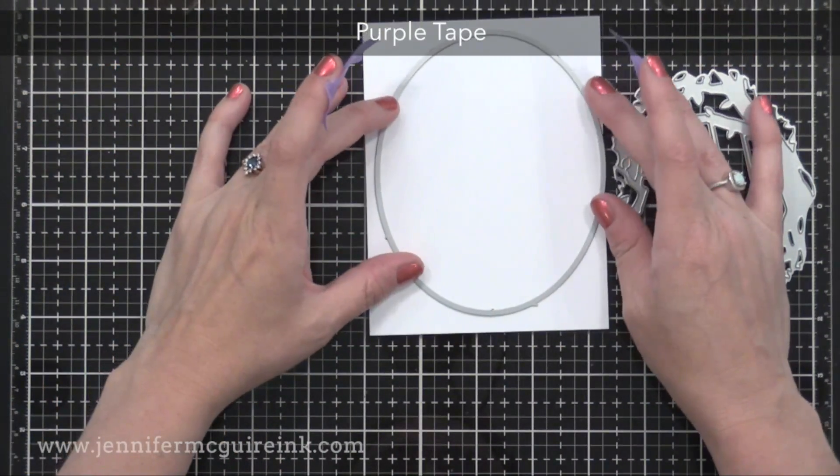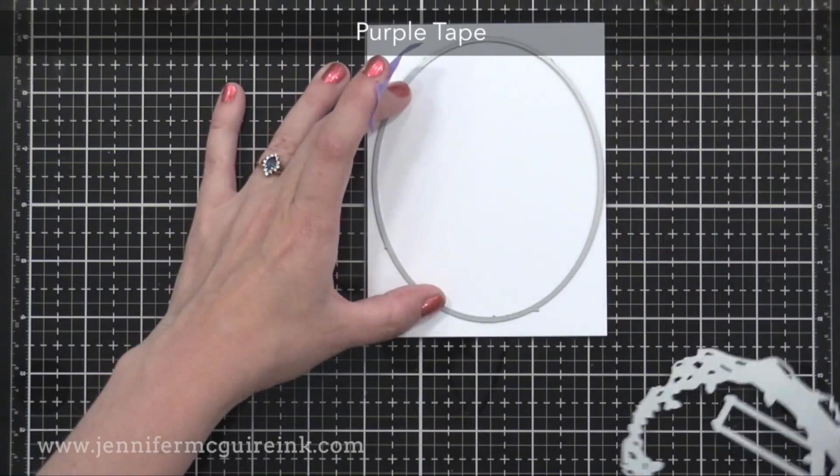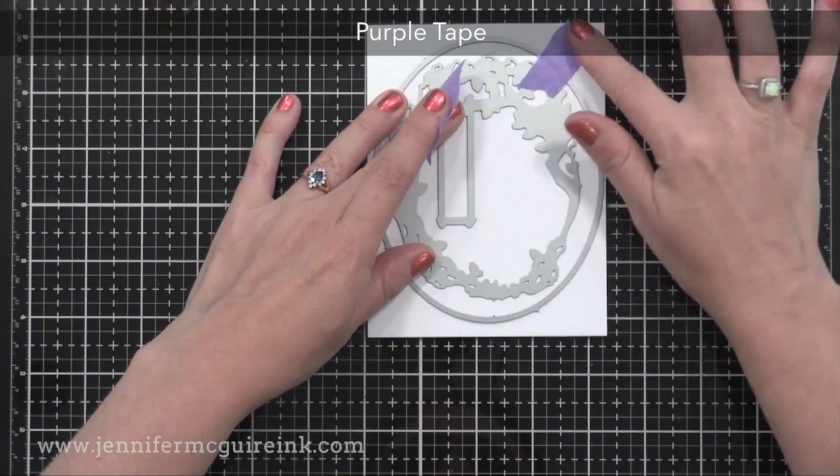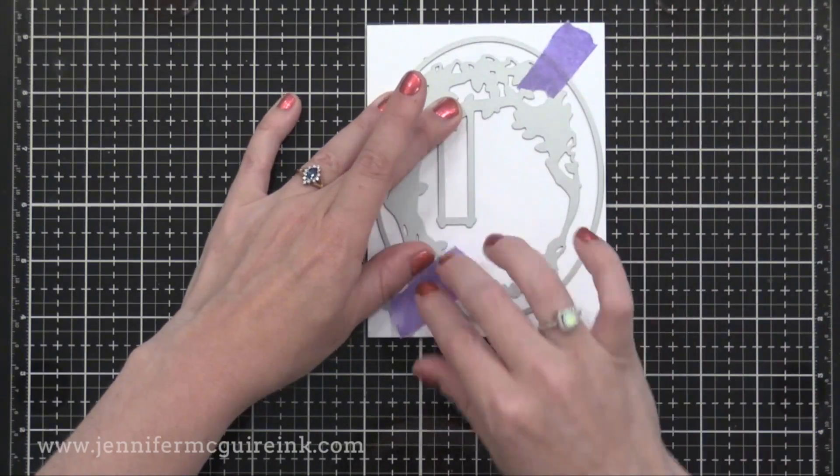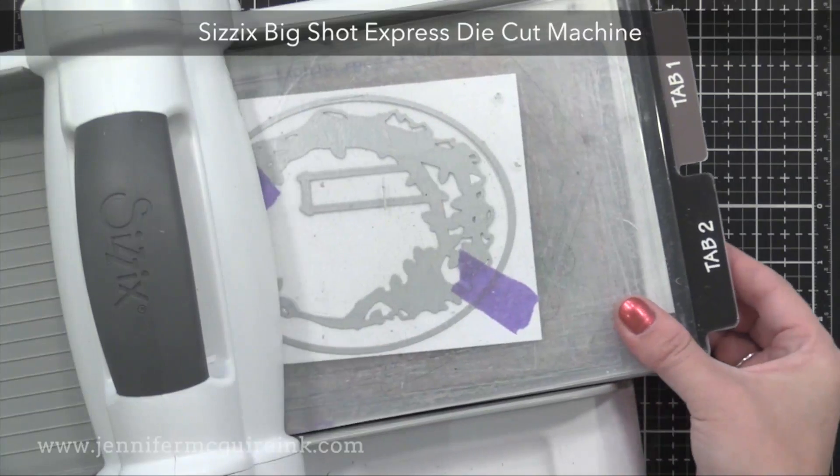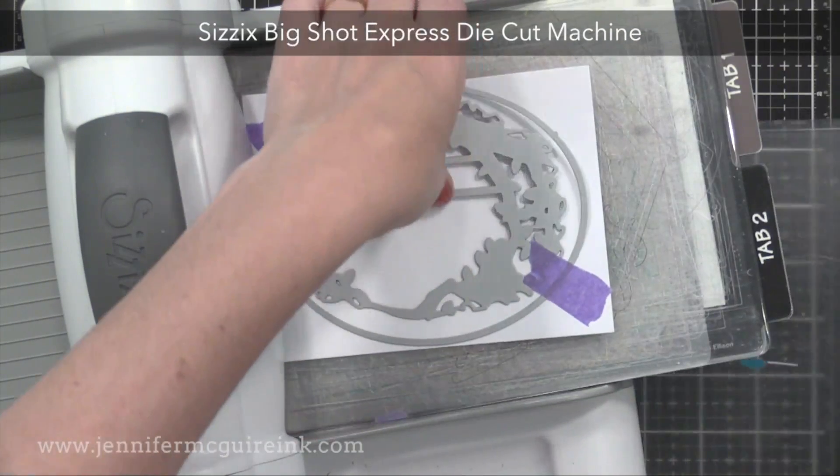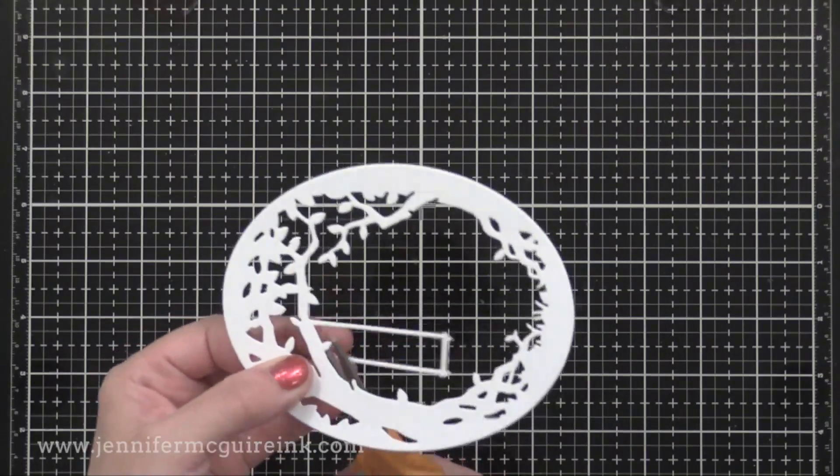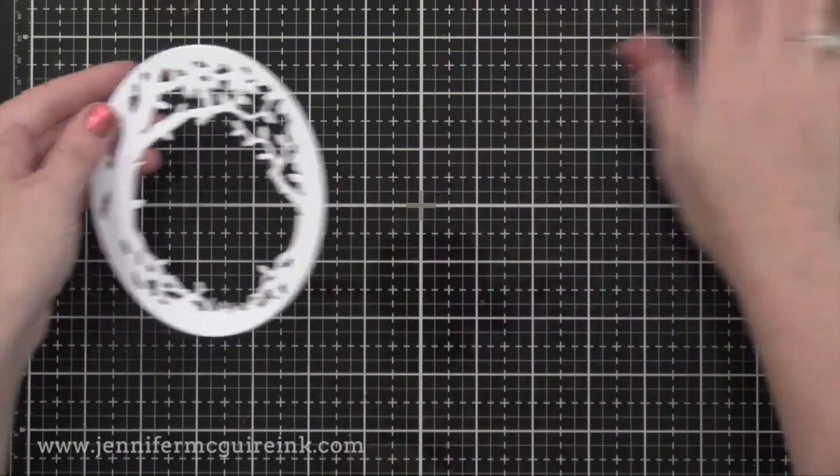Right here I just have a piece of white card stock cut to four and a quarter by five and a half. And I'm placing this oval die and this tree frame die right at the center and running it through my die cut machine. These dies are included in that My Monthly Hero May kit. For my card I decided to cut the swing off because I'll stamp the swing instead.